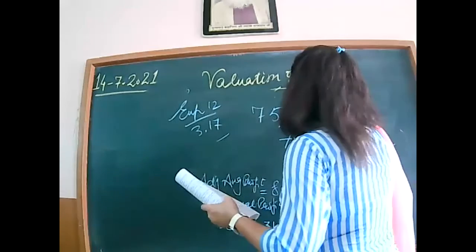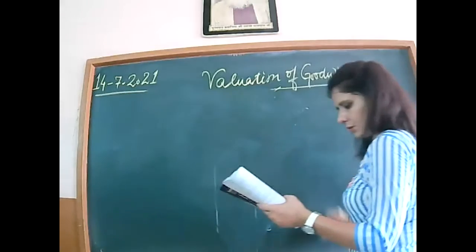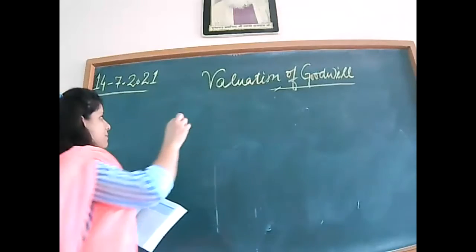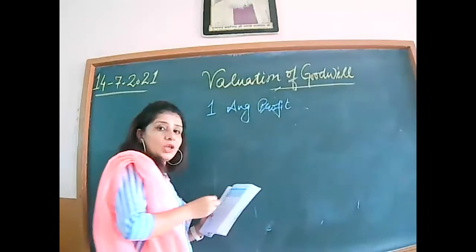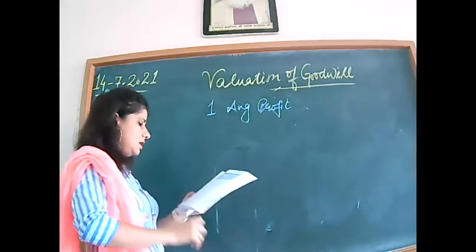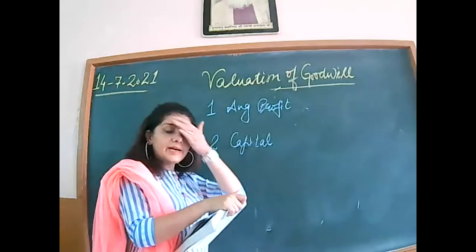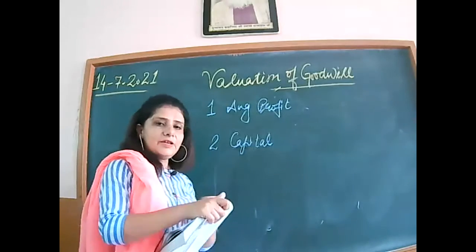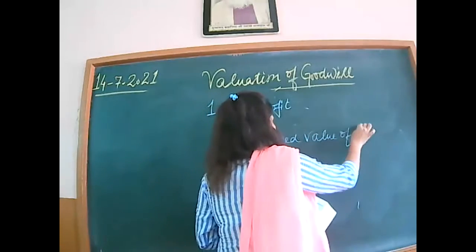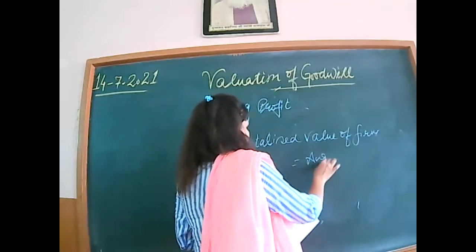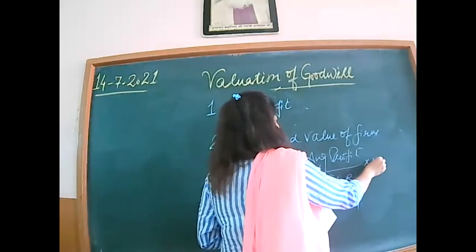We have capitalization of average profit and capitalization of super profit. First we see the formula for capitalization of average profit — it's very easy. Step-wise: first, calculate average profit. Second, calculate the capitalized value of the firm. That is average profit divided by rate of return, multiplied by 100.